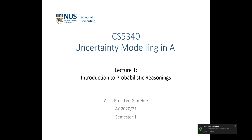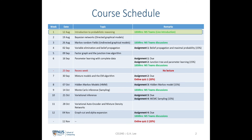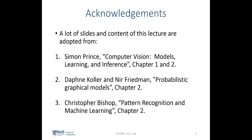Hello everyone, welcome to the lecture on Uncertainty Modeling in AI. Today I'm going to talk about several definitions in probabilistic reasoning that will be useful for the rest of the module. I didn't invent any of today's material — I took most of the content from the textbook written by Simon Prince, and also from Daphne Koller and Christopher Bishop's textbook. I strongly encourage every one of you to take a look at these textbooks after today's lecture.